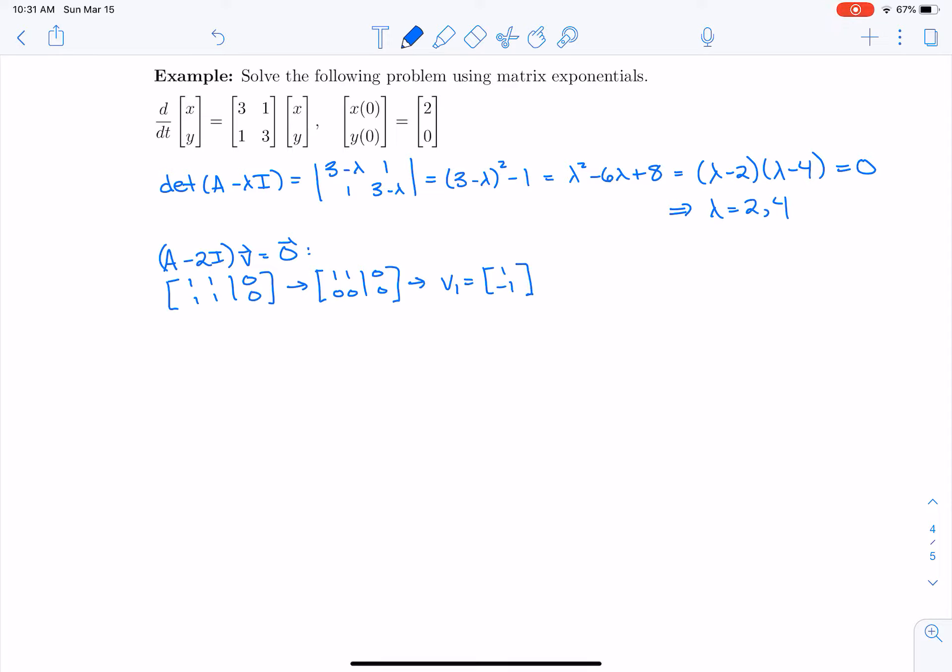So if I want to solve (A - 4I)v = 0, then when I subtract 4 from the diagonal, I get [-1, 1; 1, -1]. Of course, the second row is a multiple of the first. So when I row reduce, it becomes a row of zeros. And the second eigenvector is [1, 1].